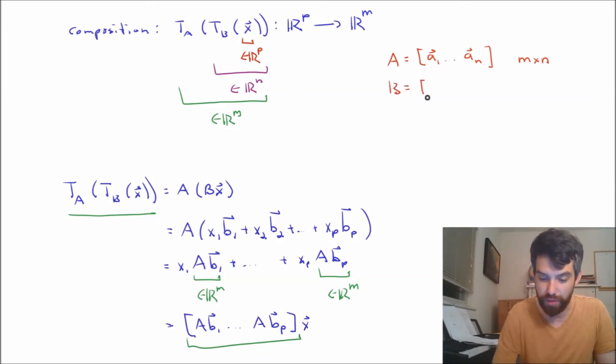And then B, we did need the labels for this one, this was going to be B_1 all the way down to, and it had P different components, because it was going from R^p to R^n, so P components. And that it was going to be an N by P matrix.